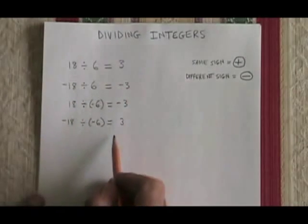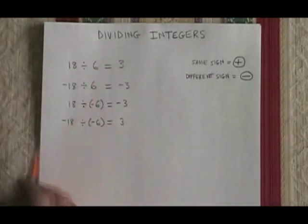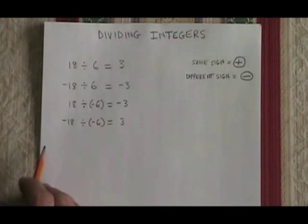The number part of the answer will always be 3, because 18 divided by 6 has to be 3. This is how you divide integers.